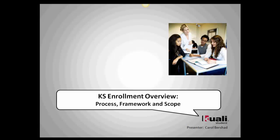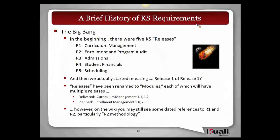So to that end, I'm going to talk a little bit about our process, our framework, and the scope of enrollment. I figure if Stephen Hawking can do a brief history of time in under 100 pages, I certainly can do a brief history of KS requirements in a couple slides. This is just enough to help you understand some of the terminology and some of the things that you might see on the wiki and why there's maybe some discrepancy between curriculum management and enrollment.